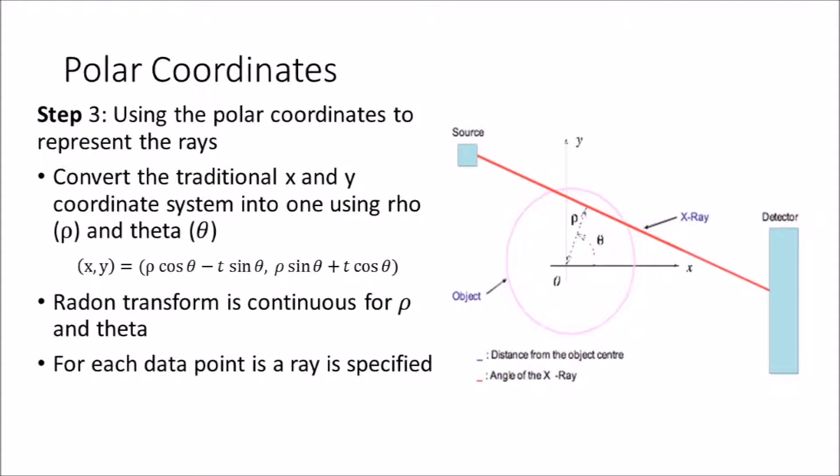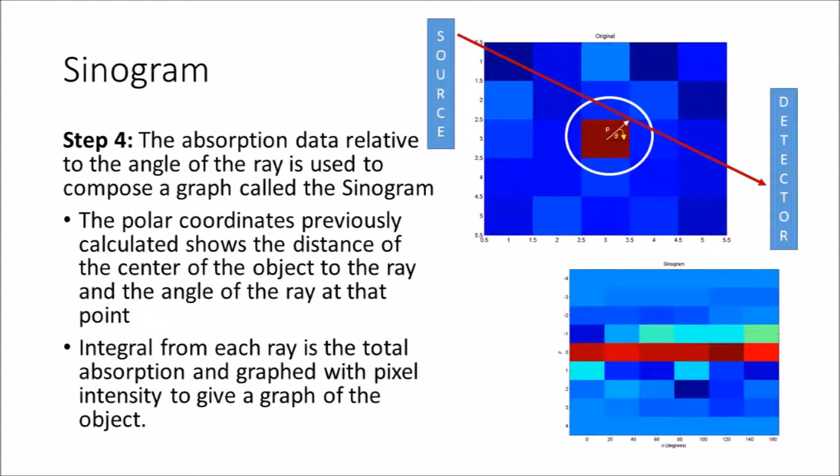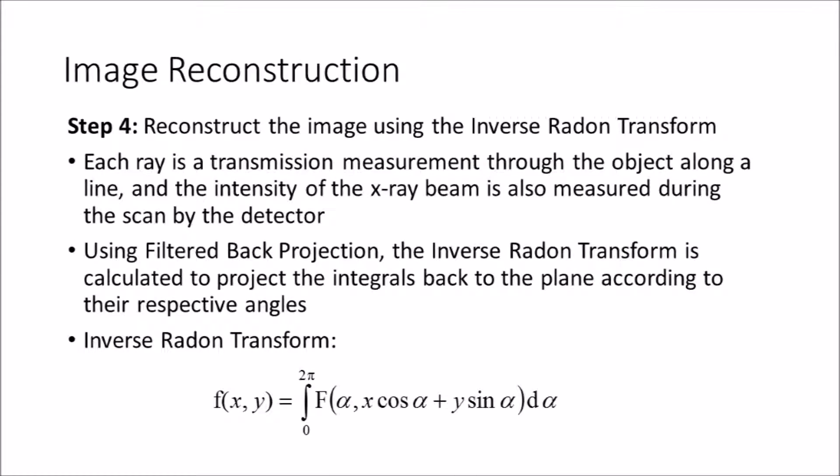The polar coordinate system will allocate the location for each ray. Now that the ray's locations are mapped out, the total absorptions are graphed on the polar coordinate system relative to the angle of the ray and the distance of the ray from the center of the object. This graph is known as the sinogram of the object. The sinogram does not reconstruct the image, but merely graphs the pixel intensity for each ray at a given location relative to the center of the object.